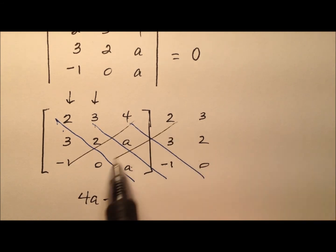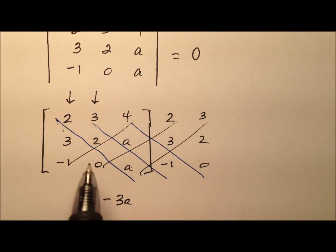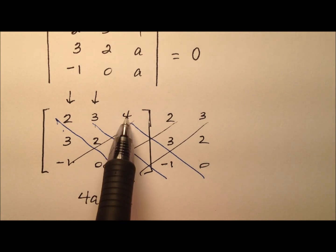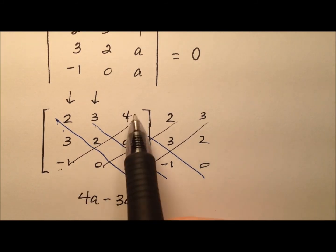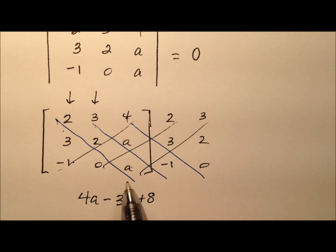Then I'm going to take these minor diagonals and multiply them, but this time I'm going to subtract the product. So negative 1 times 2 times 4 is negative 8, but I'm subtracting that, so plus 8. And then 0 times anything is just 0. Then A times 3 times 3 is 9A, but once again I'm subtracting that.